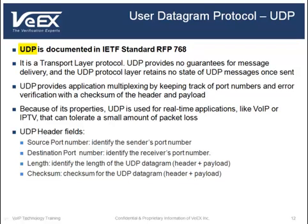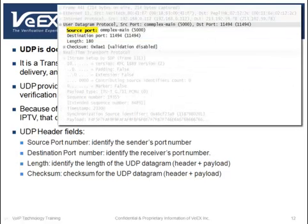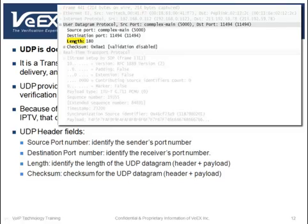UDP is a transport layer protocol documented in IETF standard RFC 768. UDP provides no guarantees for message delivery, and retains no state of UDP messages once they are sent. It provides application multiplexing by keeping track of port numbers and error verification through a checksum of the header and payload. Because of its properties, UDP is used for real-time applications that can tolerate a small amount of packet loss, such as VoIP or IPTV. UDP has four header fields: source port number, destination port number, length field identifying the length of the UDP datagram, and a checksum field.